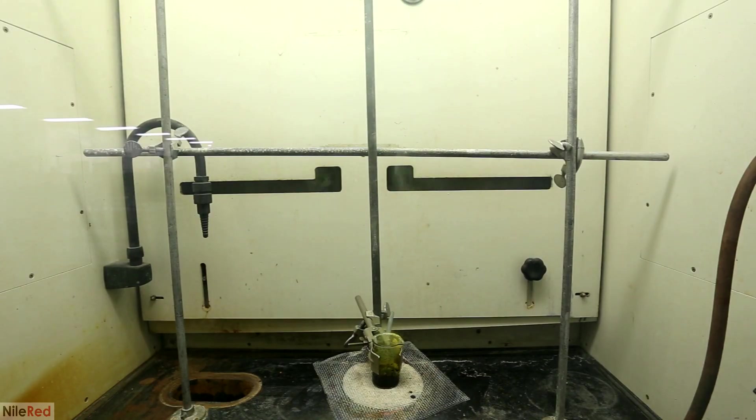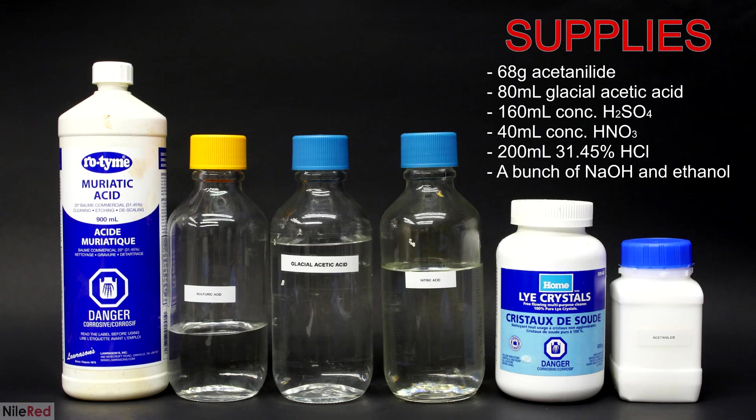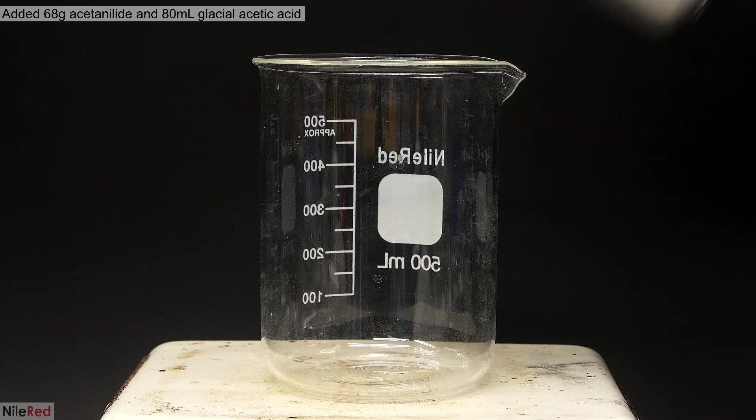On a side note, not all of the P-nitroaniline that I make here is going to be used in this video. I'm gonna be saving some to make a dye called Para Red, which can be used to dye cotton and other cellulose-based fabrics. So, to make the P-nitroaniline, this is everything that I'm gonna need. The hydrochloric acid, the acetic acid, and sodium hydroxide were purchased from the store, but the sulfuric acid, the nitric acid, and the acetanilide were all made in previous videos. If you're interested in seeing how I did this, I've put some links in the description.